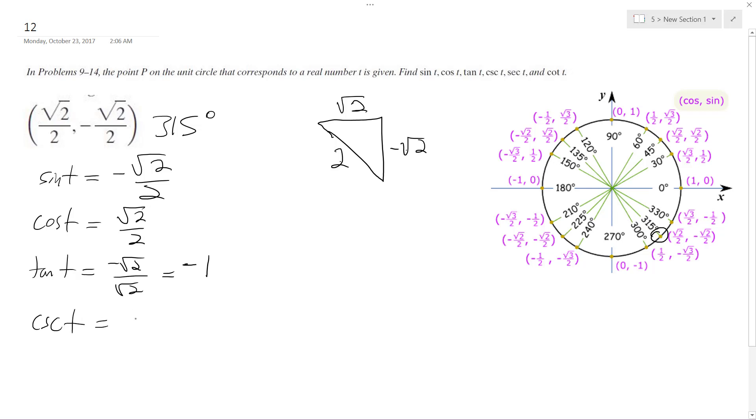Cosecant t is going to be equal to negative 2 root 2 over 2, which is just equal to negative root 2.